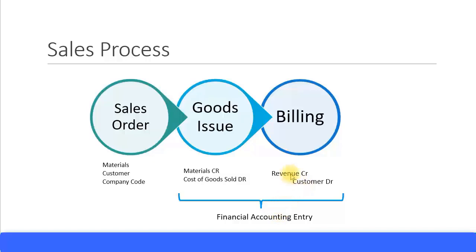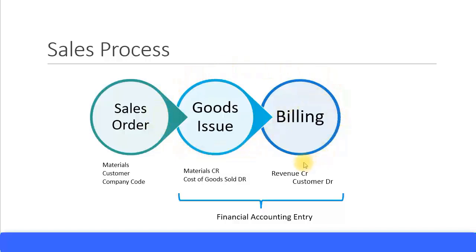At the time of billing, a financial entry happens that affects both your P&L statement and your balance sheet. Further processing involves collecting money from the customer and clearing bank accounts, but that is not part of the sales process per se — it is another set of financial accounting entries. What we are concentrating mostly on is the goods issue and the billing part.